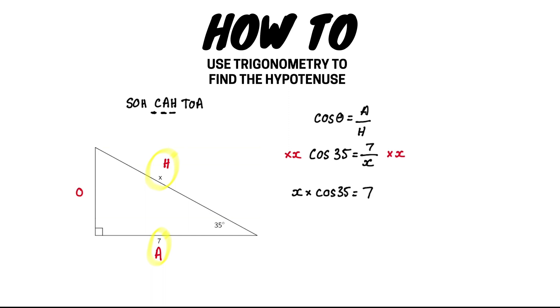Our goal is to get the x by itself on the left hand side of the equation. Because it is attached to the cos 35 by a times sign, we have to do the opposite, which is to divide both sides by cos 35.